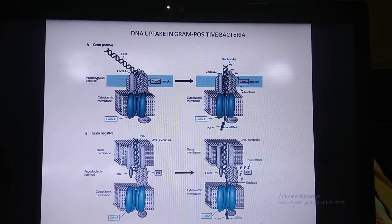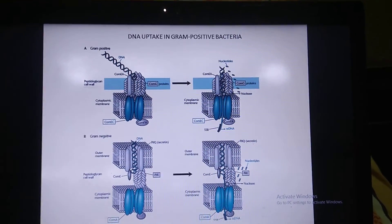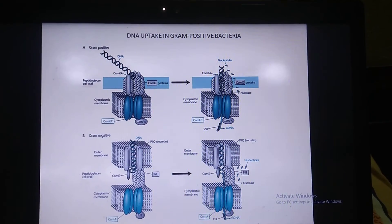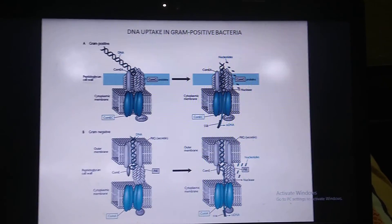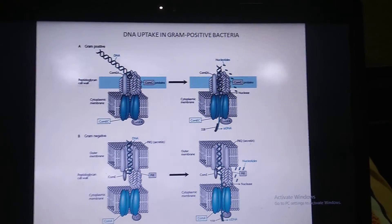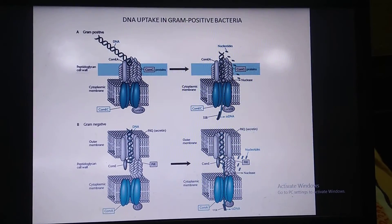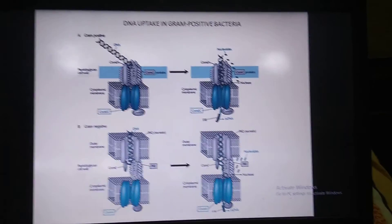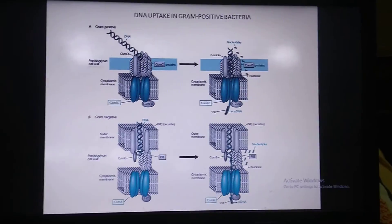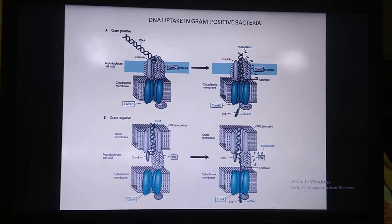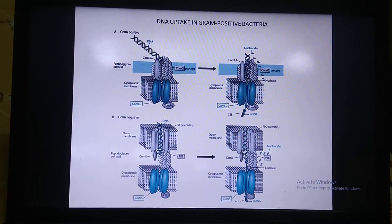An important fact to remember is that only a very small number of cells in a bacterial population are naturally competent to take up foreign DNA. Most cells cannot do this. That is why in the laboratory we make competent cells — making most cells of a population competent to take up foreign DNA.